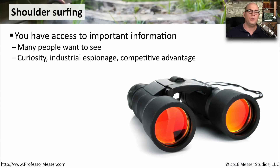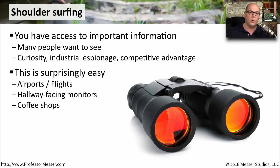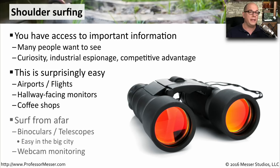Shoulder surfing is one of the easiest ways to see what might be happening on somebody's computer. You don't need to gain access to their operating system, and you don't need to infect them with a piece of malware. You simply need to stand over their shoulder and watch exactly what they're doing. This is very easy to do in airports, in coffee shops, or anywhere there might be a lot of people around. Some people can even do this from afar by using binoculars or telescopes and simply looking in the window of a building to see exactly what you're doing on your computer.